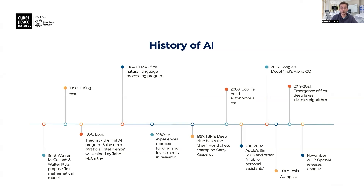The years to follow were not the easiest for AI as a field. This is what is referred to as the AI winter, where progress started to stagnate due to limited resources and funding cuts. Nonetheless, AI researchers and scientists did not give up, and at the beginning of the 21st century, a new wave of AI innovation started to take place — all the way up to 2022, when ChatGPT was introduced and took the world by storm.